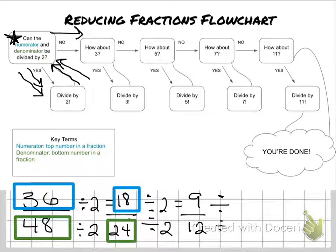So because 2 does not work, I'm going to go on to 3. So can 9 be divided by 3 and can 12 be divided by 3? So I know that 9 divided by 3 is equal to 3, so that one does work. So now I'm going to look at 12 divided by 3. And I know that 12 divided by 3 is equal to 4. So 3 does work. So I went down here and I found out yes, they could, and I divided by 3.